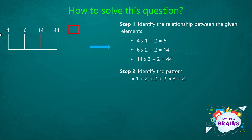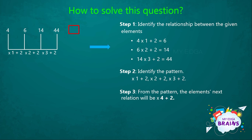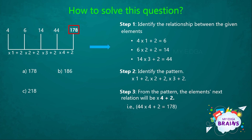Let's check whether it is right or wrong. 4 × 1 = 4, plus 2 gives 6. Again, 6 × 2 = 12, plus 2 gives 14. 14 × 3 = 42, plus 2 gives 44. So from this pattern, our next relation will be ×4 + 2. That is, 44 × 4 + 2 gives 178. So the missing element is 178. From the options, our answer will be option A, 178.